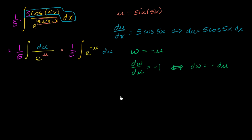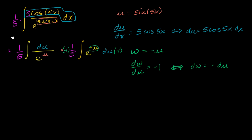In differential form, dw is equal to negative du. So e to the negative u is our w. But we have just a du — we don't have a negative du there. We can create a negative du by multiplying inside by negative 1 and also multiplying the outside by negative 1. Negative 1 times negative 1 is positive 1, so we haven't changed the value. We have to do both of these for it to make sense — a negative 1 here and a negative 1 right over there.